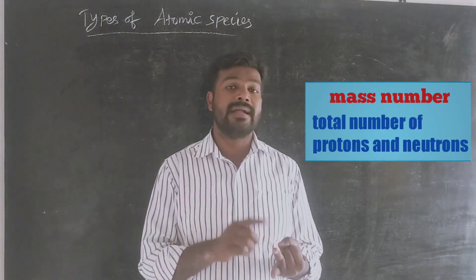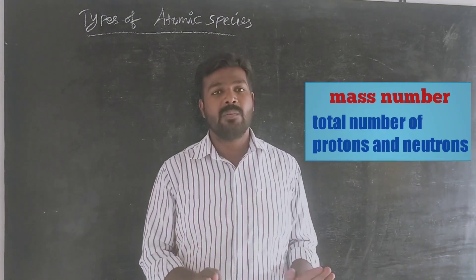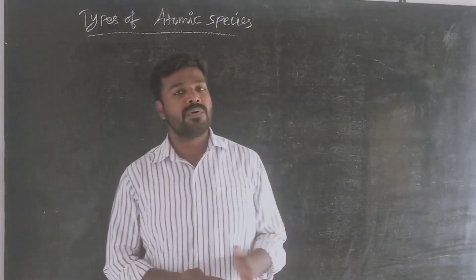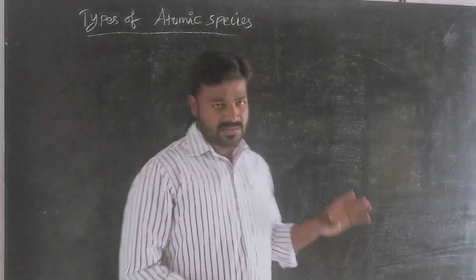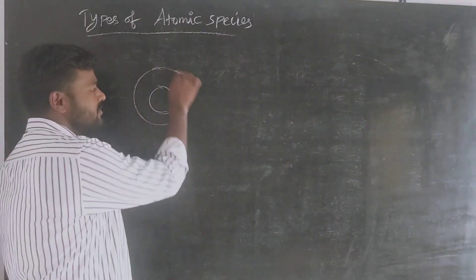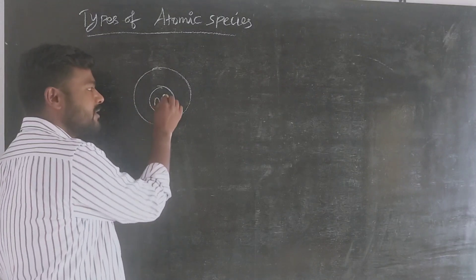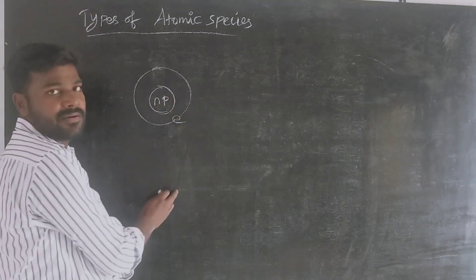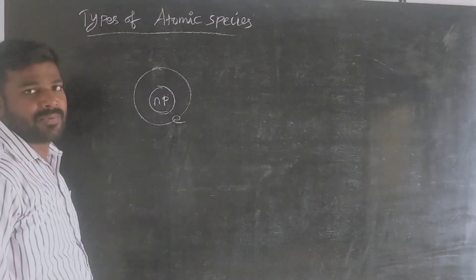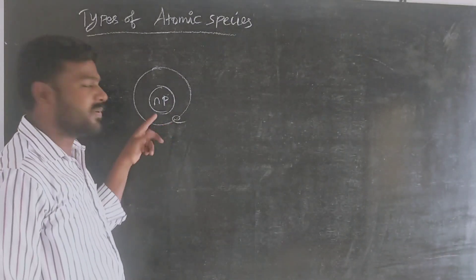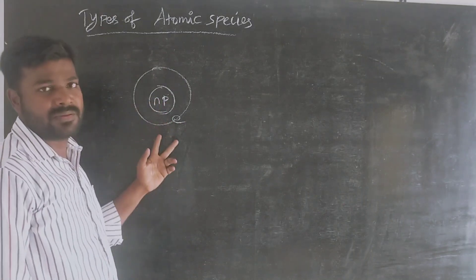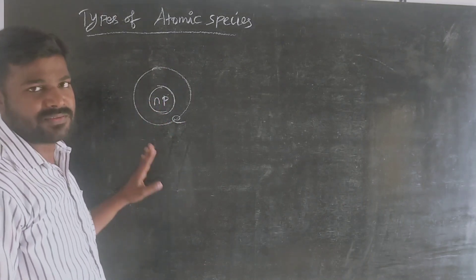The mass number is the most important part of the atom. The atom has a center point called the nucleus, with an outermost shell. In the nucleus there are protons and neutrons; the number of protons is equal to electrons. So, one atom is electrically neutral.